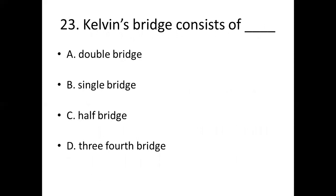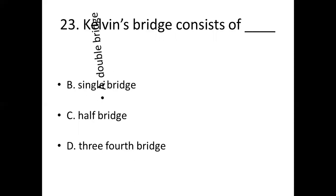23rd bit. Kelvin's bridge consists of dash. Option A: double bridge. Option B: single bridge. Option C: half bridge. Option D: three-fourth bridge. Answer: Option A, double bridge.